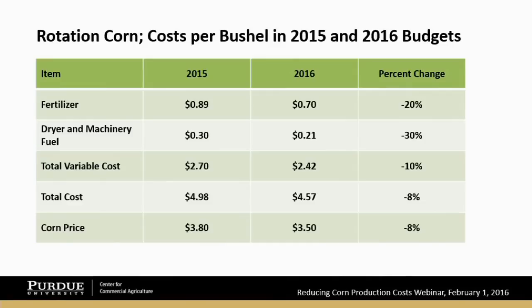One of the very positive things that's happened recently, particularly in the last two or three months, is the large drop in fertilizer prices. Looking at rotation corn on average productivity soil, we're seeing a per-bushel fertilizer cost of 89 cents in the 2015 budget, down to 70 cents in 2016 — about $30 per acre. The drop in dryer machinery fuel has also been positive. Total variable costs — including fertilizer, seed, chemicals, fuel, repairs, insurance, and interest — dropped from $2.70 to $2.42 per bushel, or about $50 per acre.